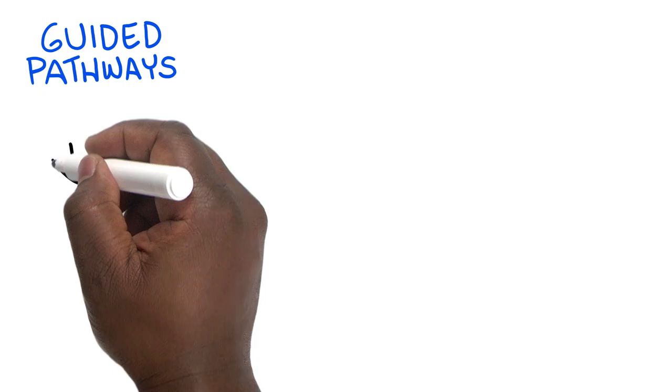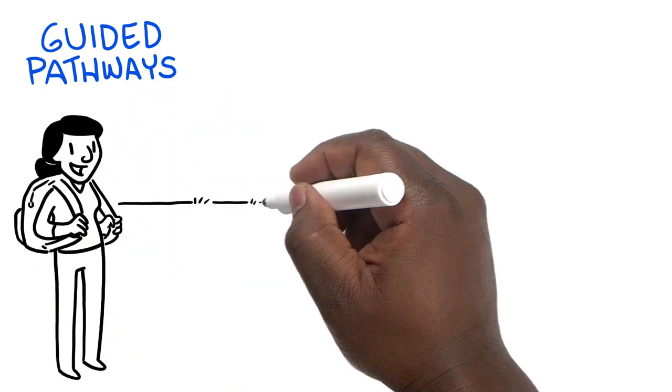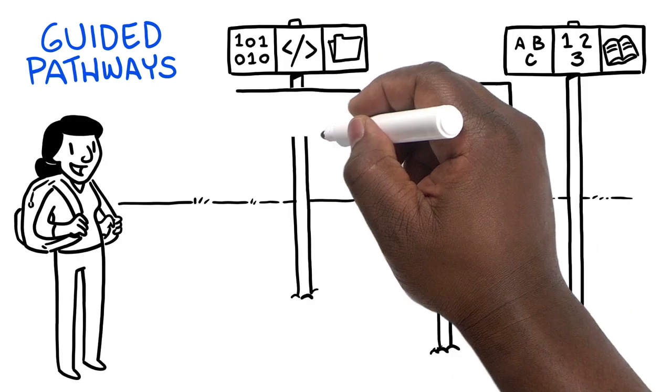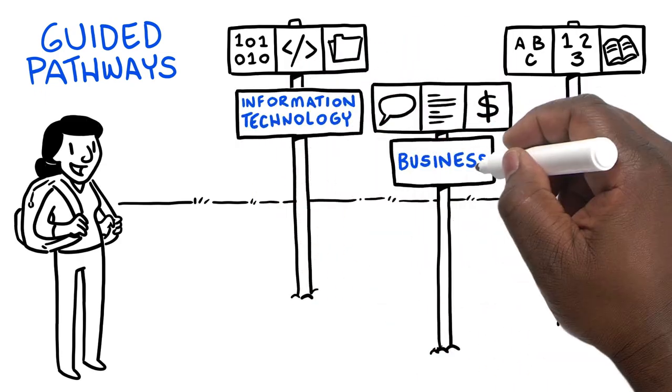With Guided Pathways, colleges are making the choices clearer by grouping courses together in broad fields of interest, like information technology, business, or education.